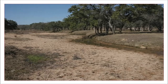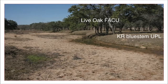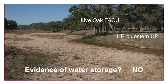The same question can help interpret this site. Live Oak is a facultative upland plant, and KR Bluestem is an upland plant. If these banks were storing water, these plants would likely be replaced with water-loving obligates and facultative wetland plants. While surface flow is visible at both of these sites, the plants indicate where water is being stored under the surface in the water table.